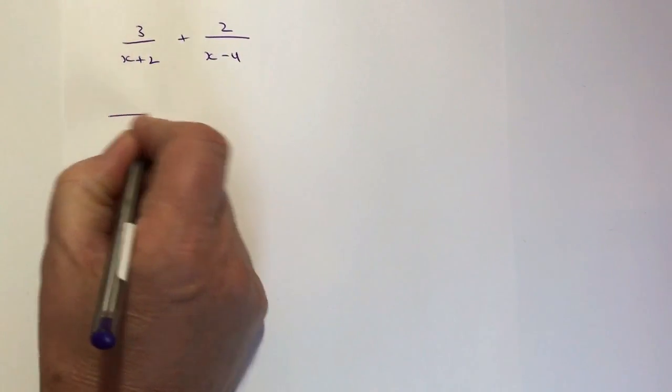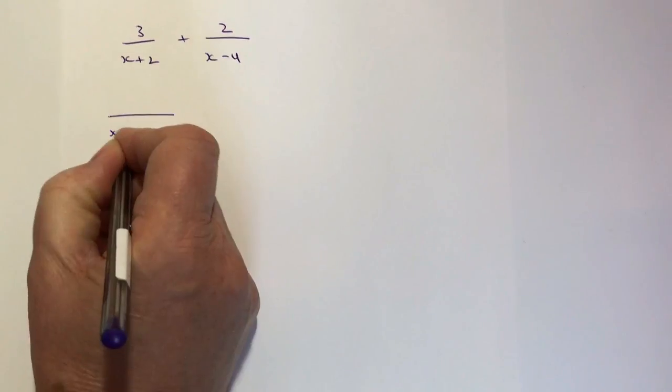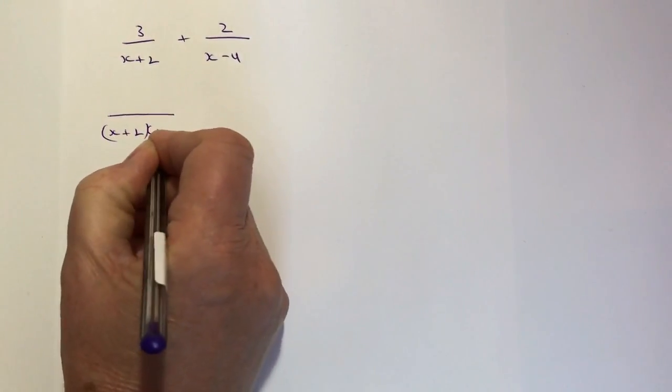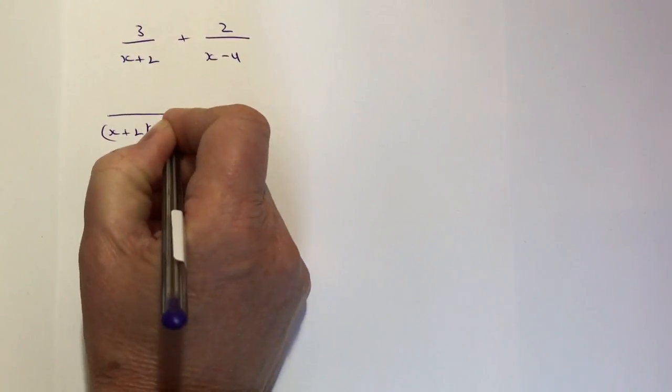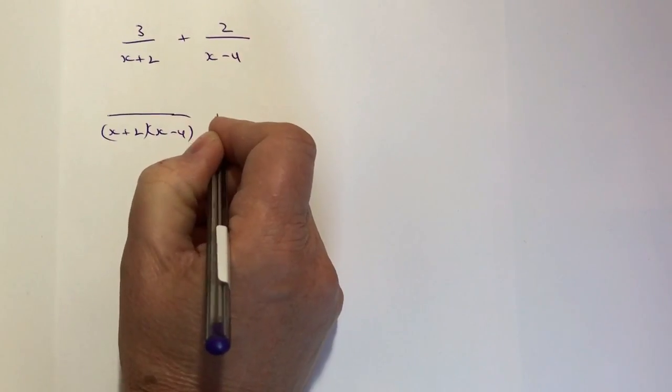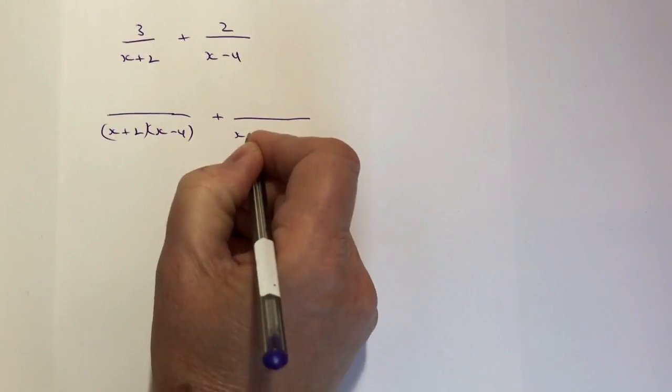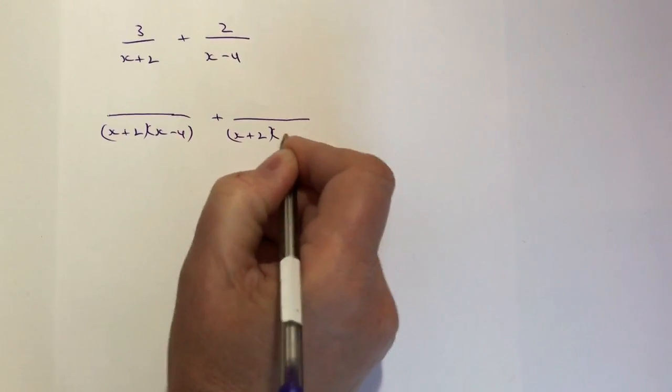What I'm going to do is write both of these fractions under the same denominator, and the denominator I'm going to choose is going to be the two denominators of the separate fractions multiplied together. So that's going to be (x+2) multiplied by (x-4).